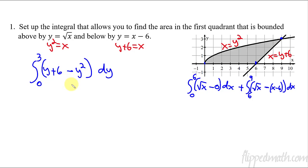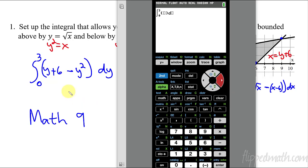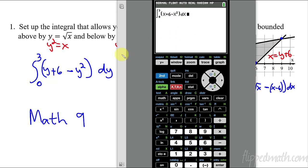These two integrals are exactly equal. With respect to y it's a much simpler integral compared to the two-part version with respect to x, and that's why sometimes we prefer integrating with respect to y. One quick note: if you use a calculator on the TI-84, you still use the X/T/θ/n button as the variable even when the integral is in terms of y. So you'd enter zero to three of (x plus 6 minus x squared) with respect to x in the calculator — just use x as the variable regardless.